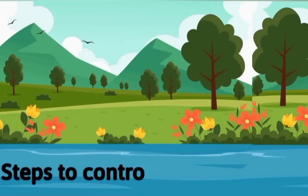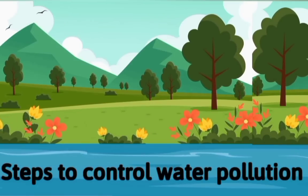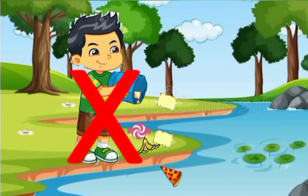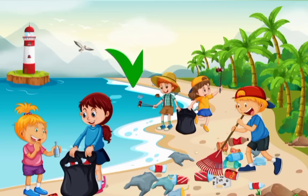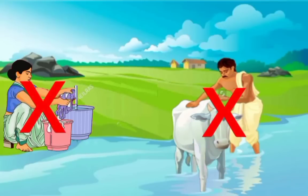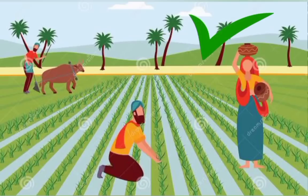Now let's know about the steps we should take to control water pollution. One very easy way is to educate people to stop dumping garbage into water bodies, to stop washing clothes and bathing animals in rivers and lakes, and to discourage the use of harmful pesticides and fertilizers in agricultural fields.